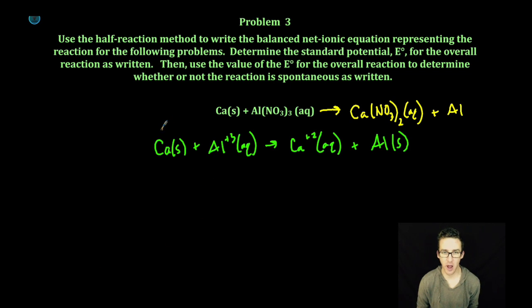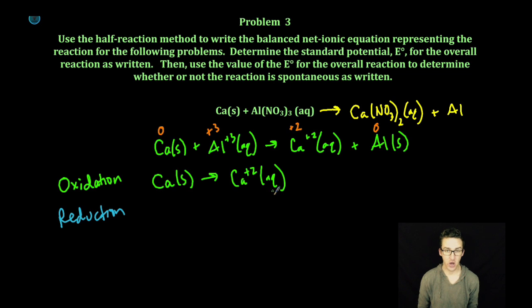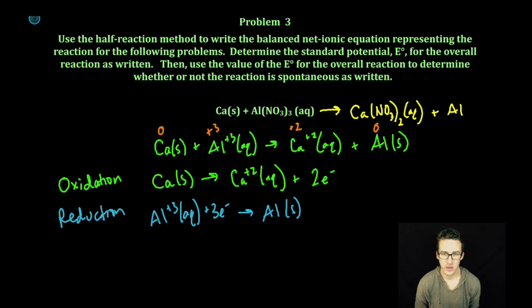So now, just like the previous problem, we're going to assign some oxidation states, and we need to come up with both the oxidation and reduction half reactions. As written, my calcium is oxidized to the calcium ion and loses two moles of electrons for every mole of calcium. My aluminum ion is reduced and gains three moles of electrons for every mole of aluminum ion reduced.